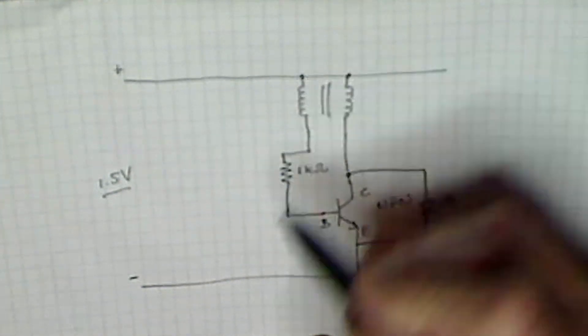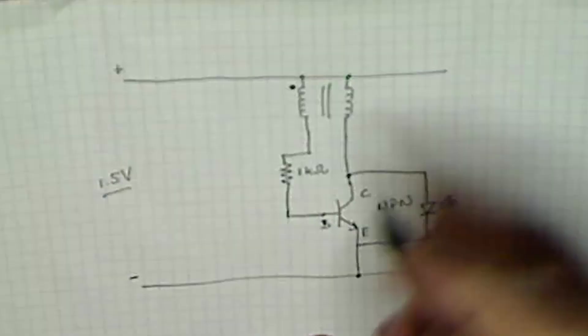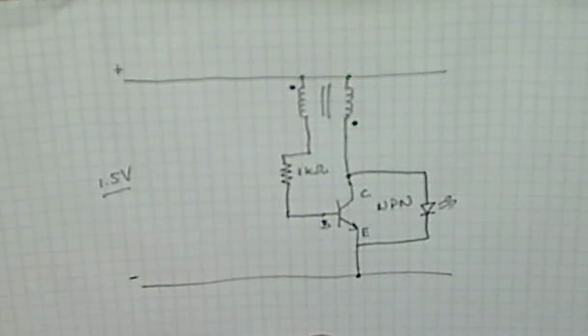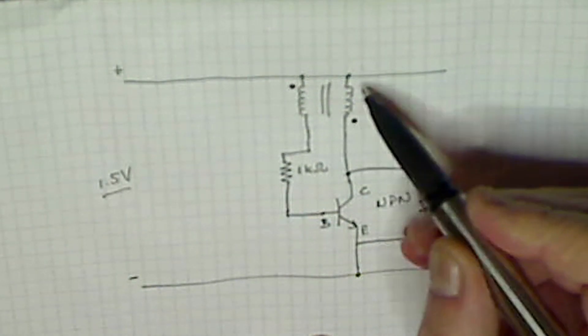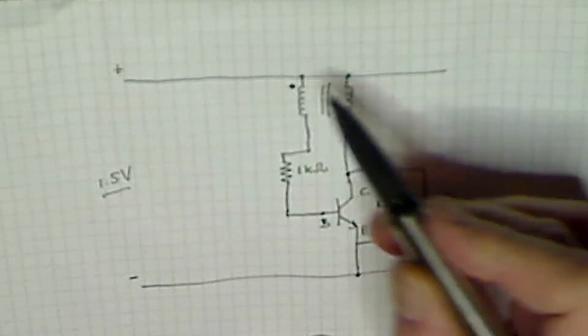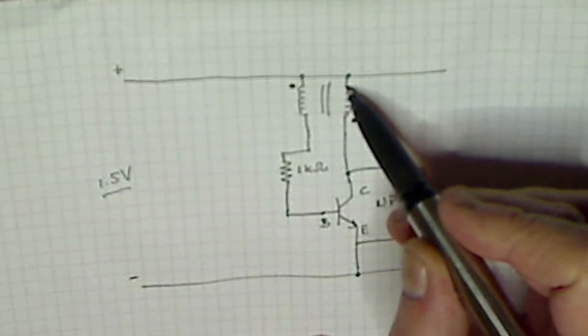One thing you need to remember is, if this is the beginning of this inductor, this will be the beginning of the other inductor. Hence, you cross over the two leads. So, if this was the start, and that was the start, you'd connect that one start with this one's end.